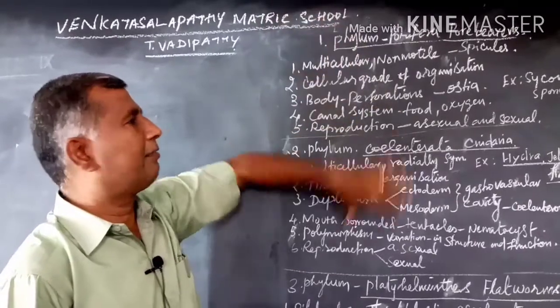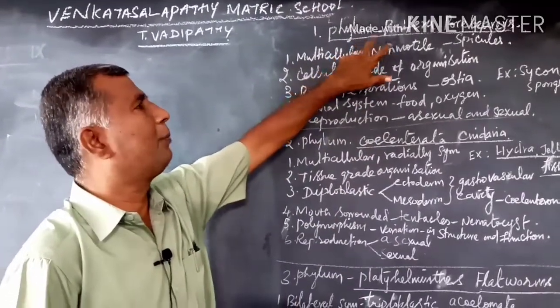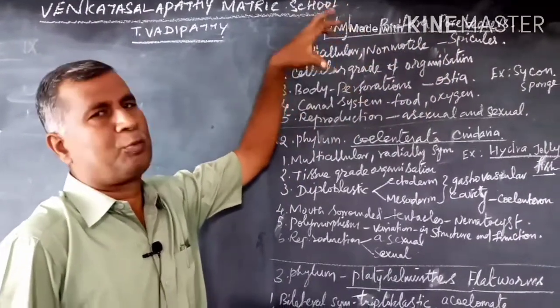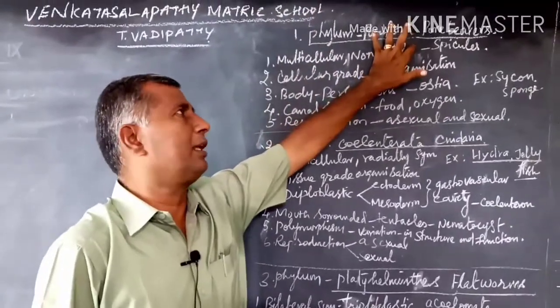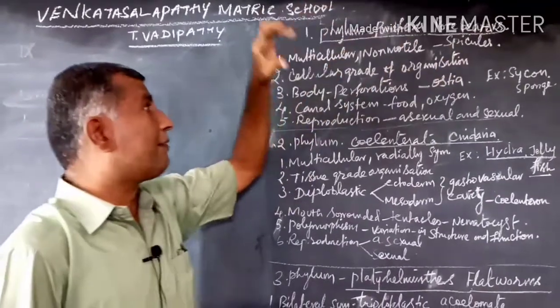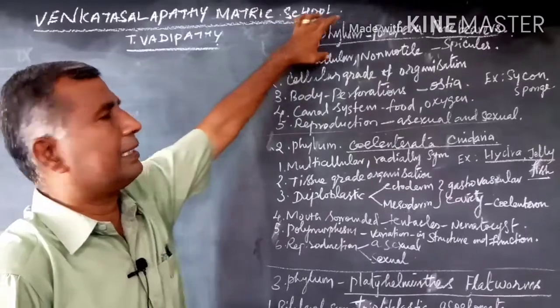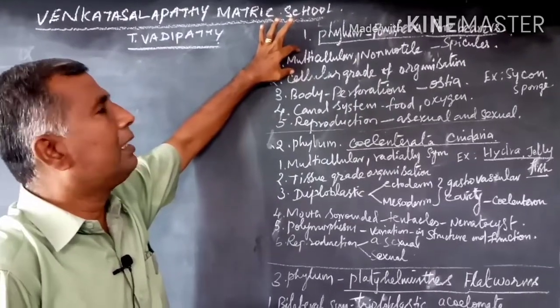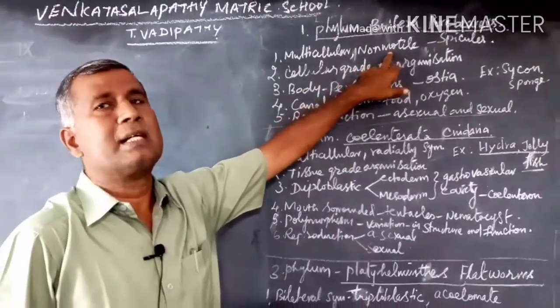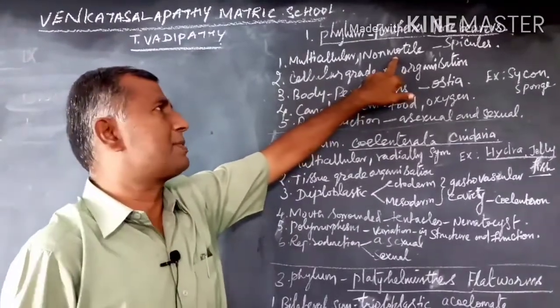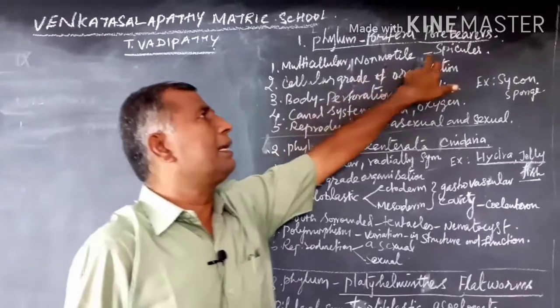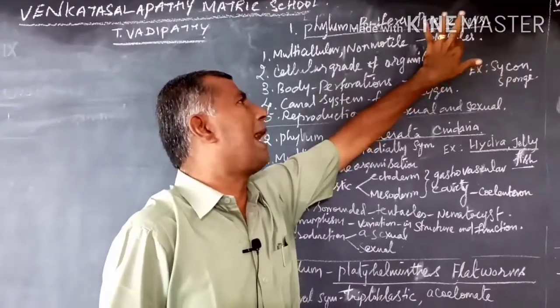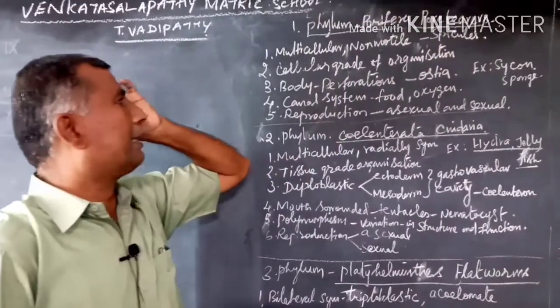We will see the invertebrate phyla one by one. First phylum is Phylum Porifera – pore bearers, which means animals having a number of pores in their body. First organized cellular grade of organization is exhibited by Phylum Porifera. The body is made up of numerous cells – they are multicellular. They are non-motile, sedentary, attached on the substratum. The skeleton is made up of spicules, which acts as a backbone.